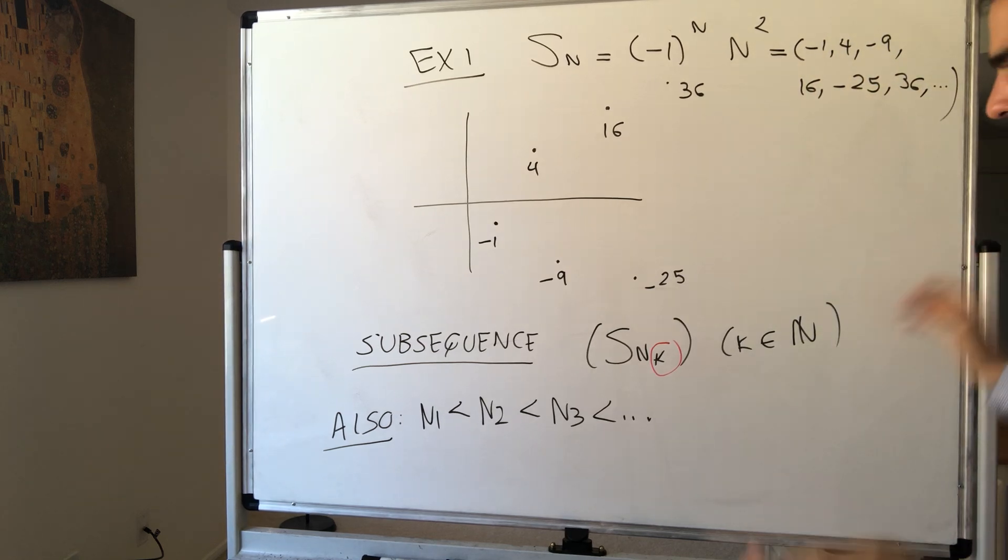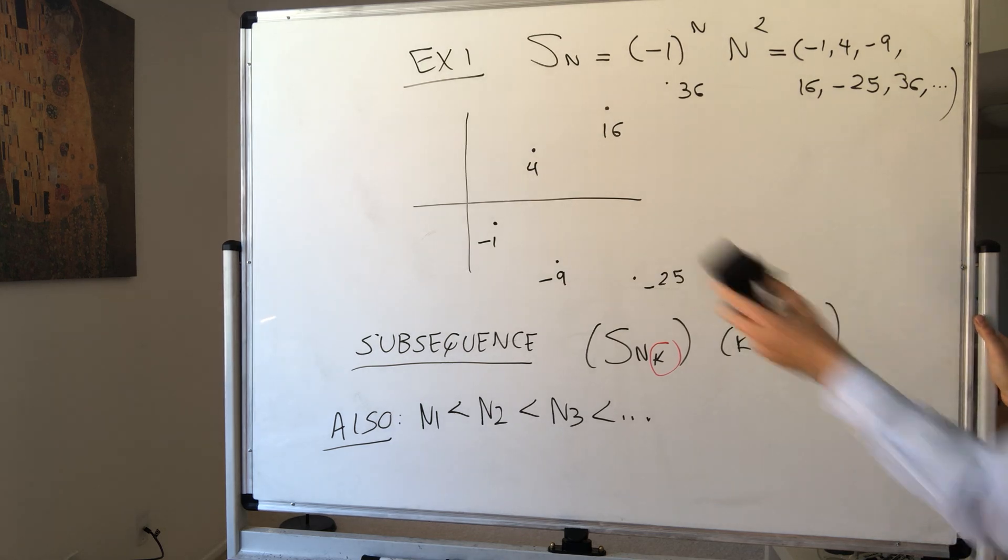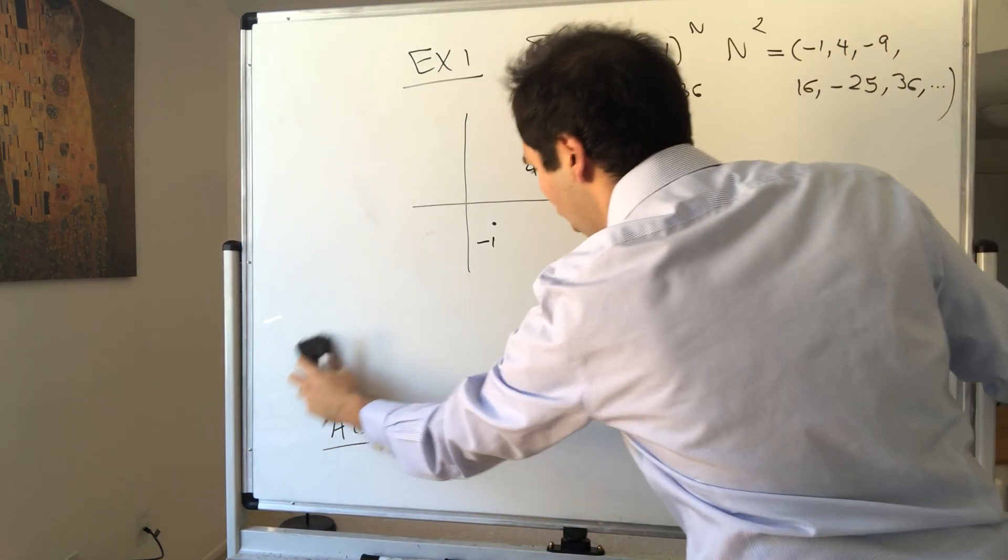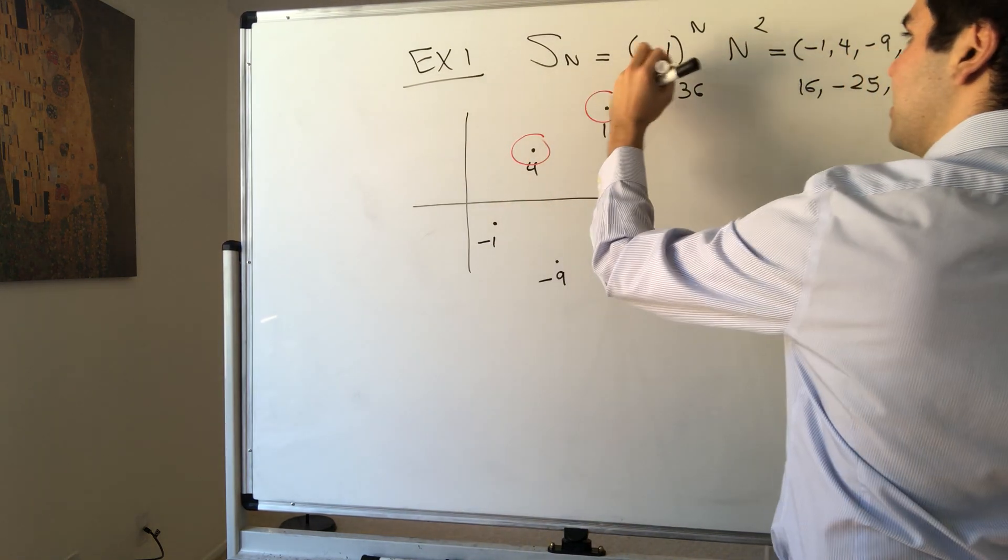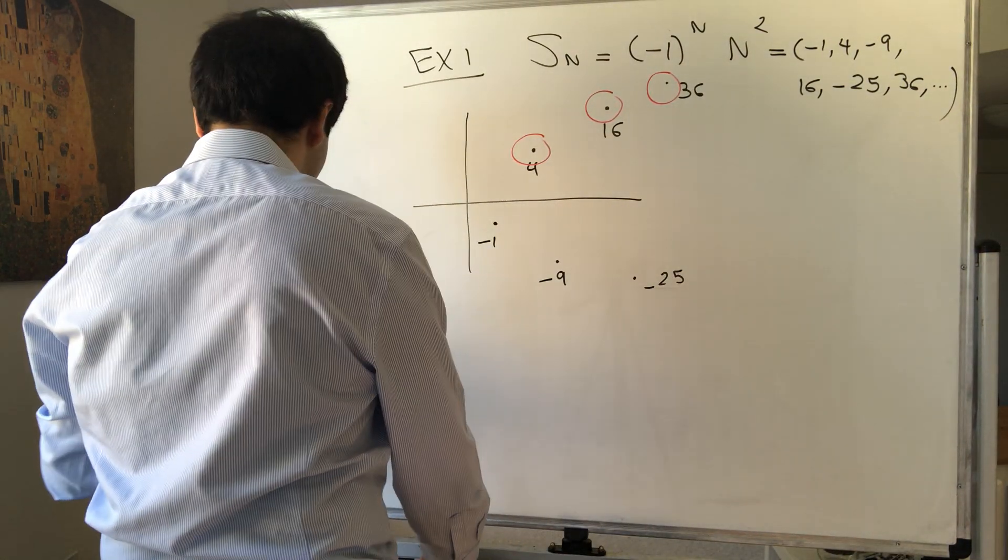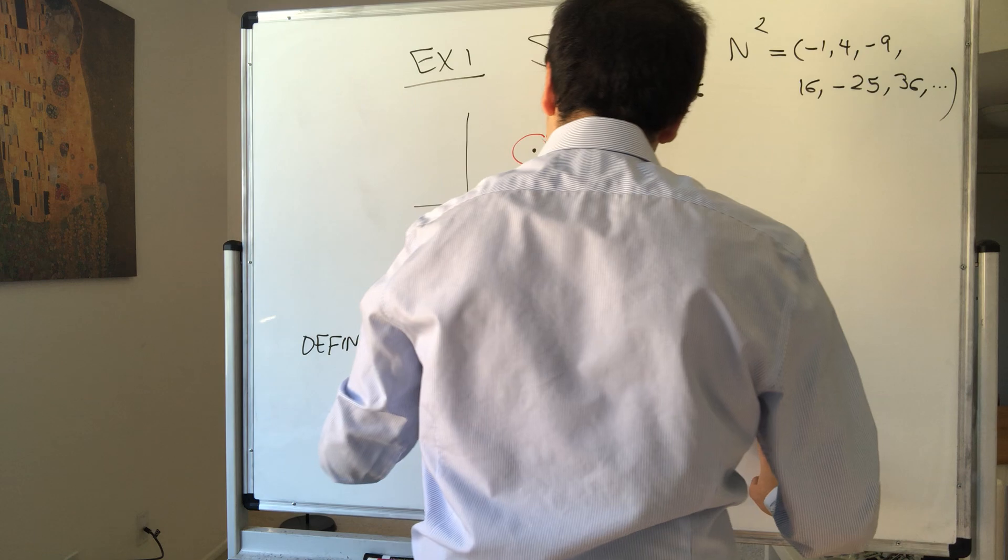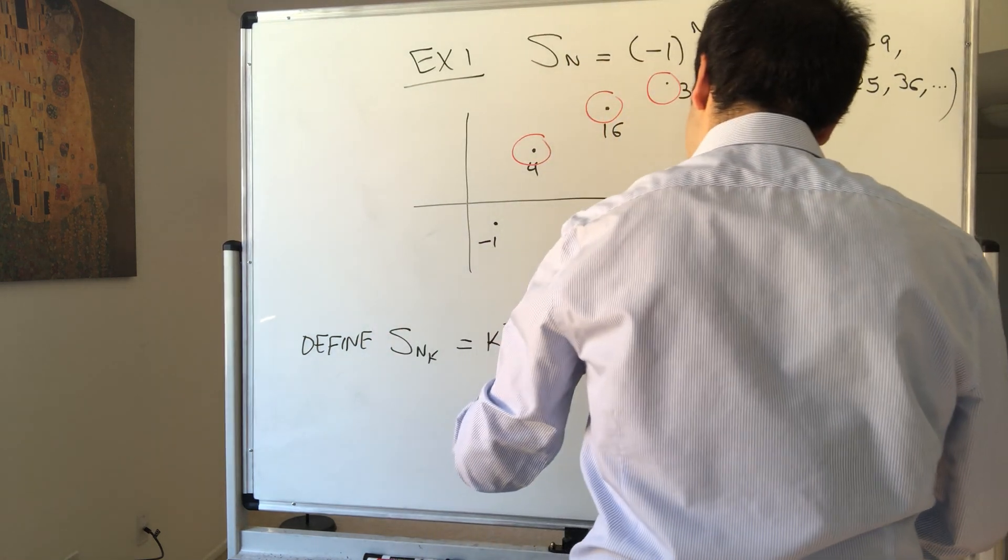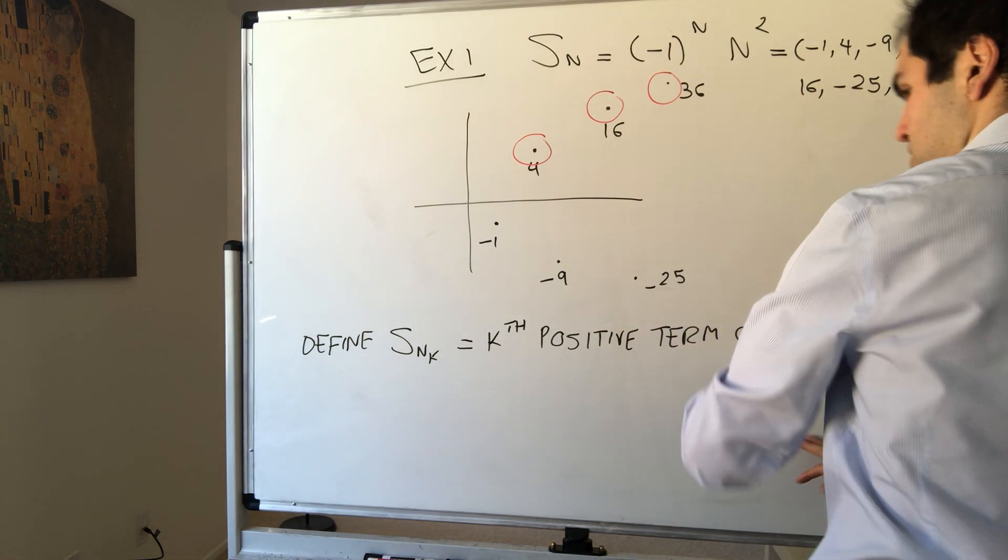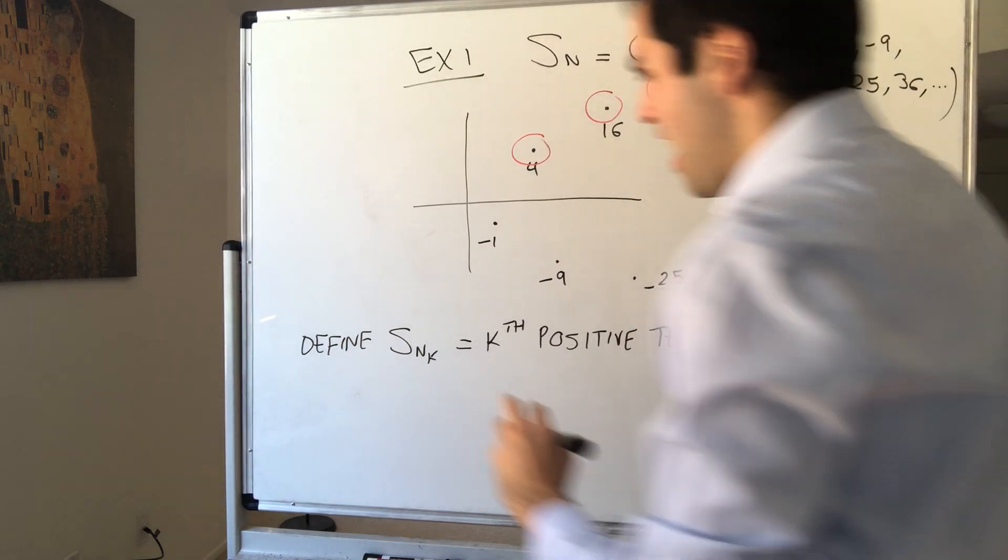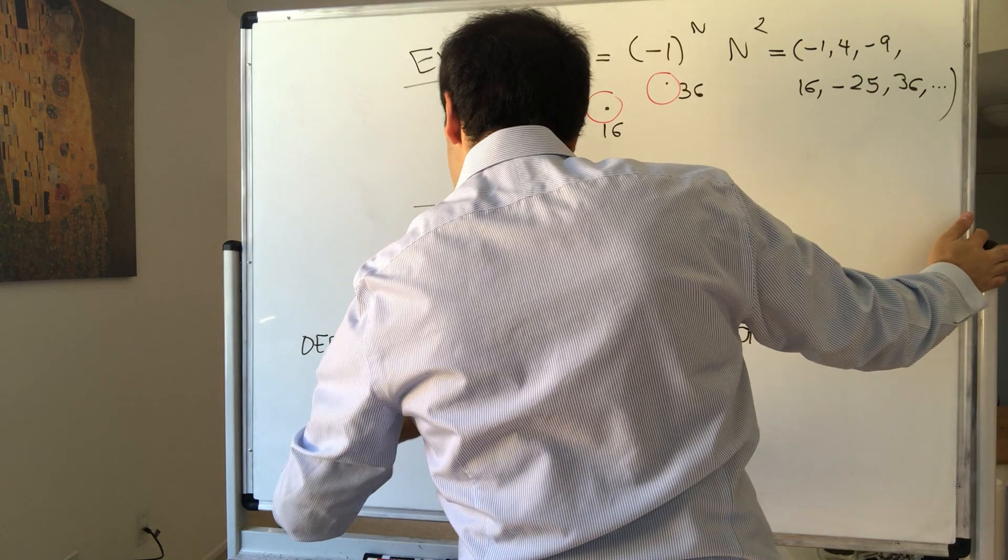And consider the following subsequence. So we want to stay positive here. So in other words, the subsequence is just all the positive terms of Sn. So in other words, consider the following subsequence SnK. Define SnK as being the k-th positive term of Sn. So, for instance, Sn1, so the first express stop, is the second value of the sequence, S2, which is 4.